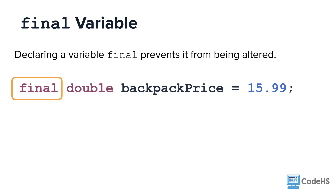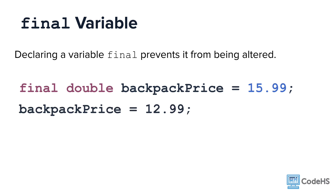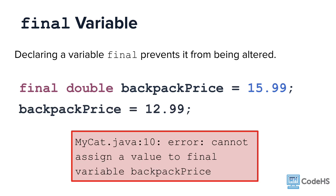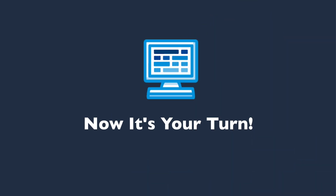One last note about variables: you can prevent a variable from being altered by using the keyword final before the data type. If there is an attempt to change the variable value, then an error will be called indicating that the variable has already been assigned. This is often used as a security measure in more complex programs to ensure that values cannot be modified by others. Now that you know the basics of using variables to store primitive values, you can start using them in your own programs.